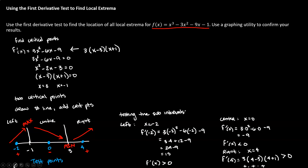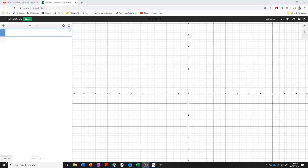This problem asked us to find the location of all extrema — we've done that. There is a max at x = −1; we could plug −1 into the original function to calculate the maximum value. There is a min at x = 3. The second part of the problem says to use a graphing utility to confirm our results, so I'm going to pull up Desmos and show you how to do that.